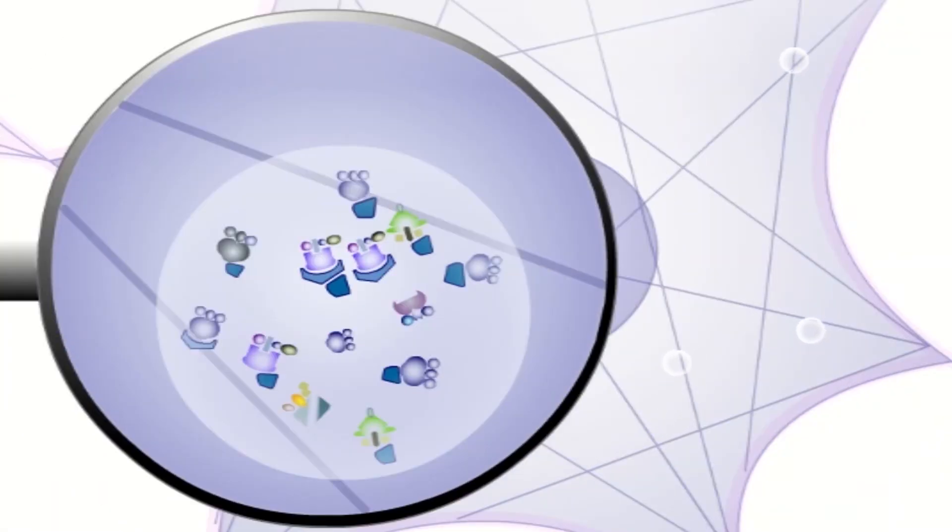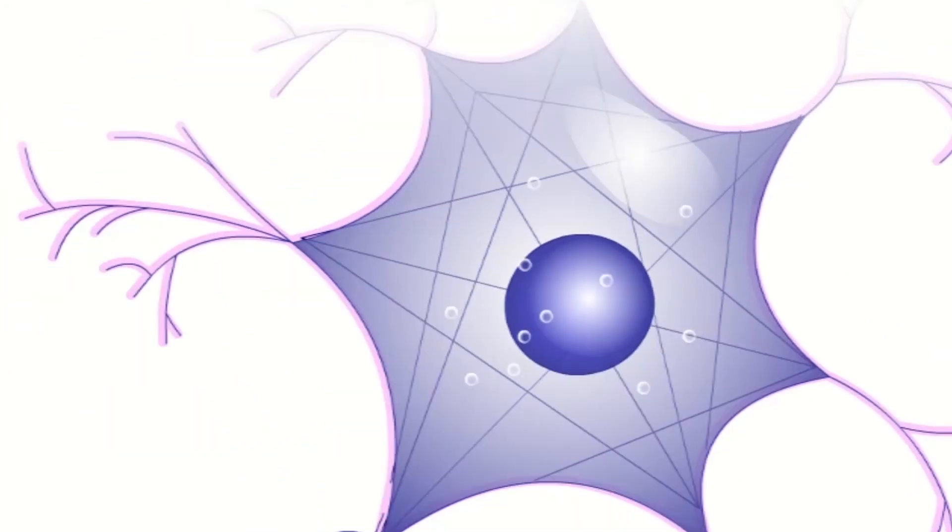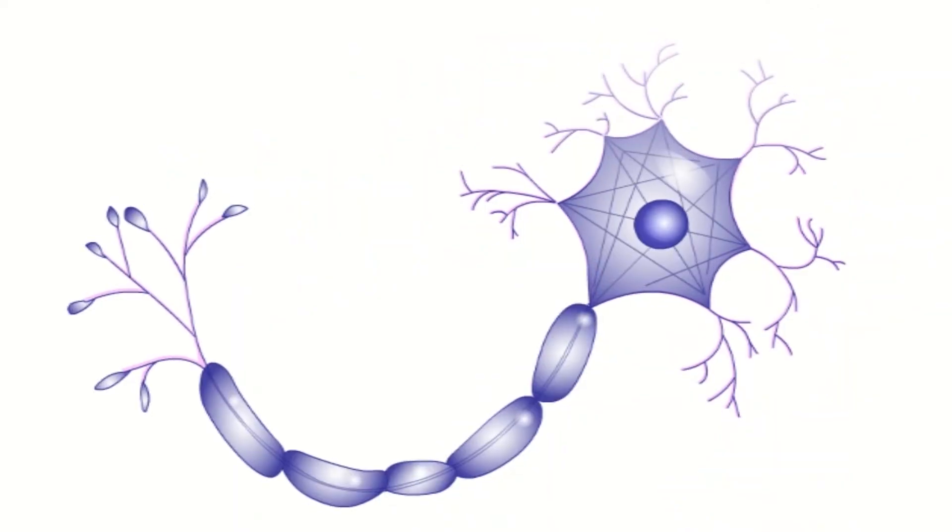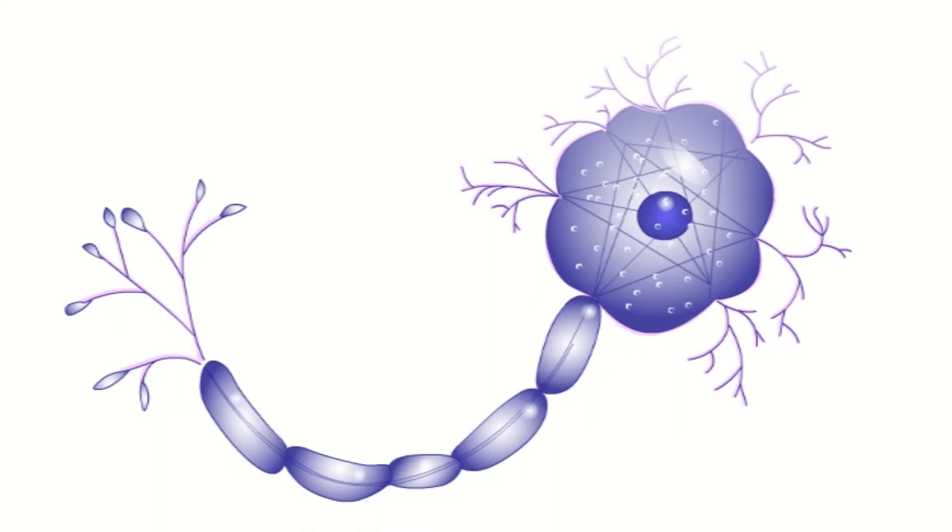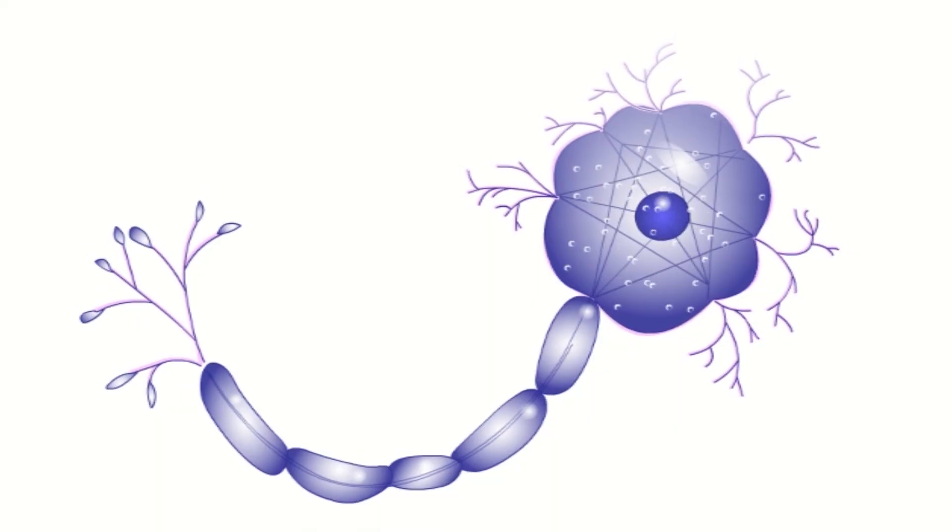GM2 ganglioside cannot be broken down and they accumulate in the lysosomes. The nerve cell swells up as GM2 ganglioside accumulates. Since the GM2 ganglioside cannot be recycled, its availability for repair or making new cell membrane is limited. The buildup is also toxic for the nerve cells.